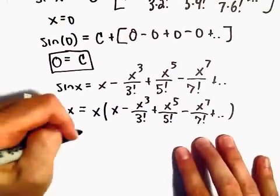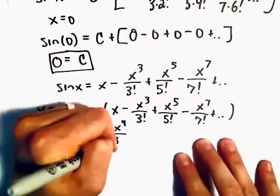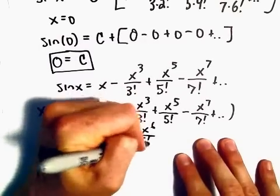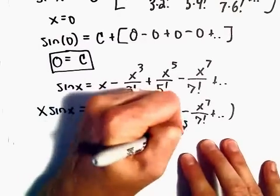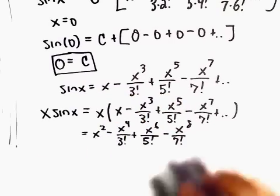Because when we multiply by x, we'll have x squared minus x to the 4th over 3 factorial, plus x to the 6th over 5 factorial, minus x to the 8th over 7 factorial. So we're just increasing all the exponents by 1.